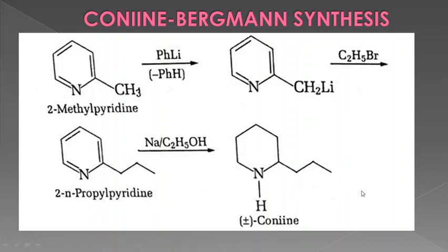This completes the unraveling of the structure of conine, a very simple alkaloid and important from an examination point of view. Three degradation reactions are very important: reaction with HI, Hoffman's exhaustive methylation, and Brown degradation. Both syntheses — Bergman and Ladenberg — are also very simple and useful from an examination point of view. Thank you.